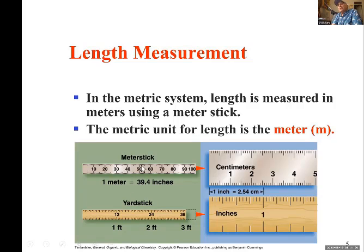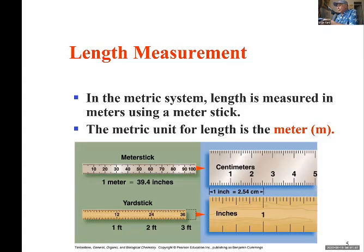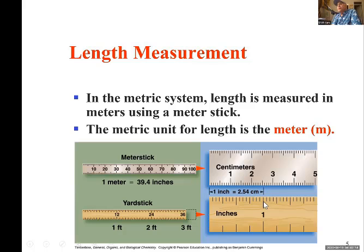You will learn how to convert these two in this chapter. One meter is 39.4 inches, and a yard is simply 36 inches — three feet is 36 inches. In the metric system, one meter is 100 centimeters. One centimeter is approximately the thickness of the nail on your smallest finger. And 2.54 centimeters equals one inch. We're going to do a lot of conversions in this chapter.